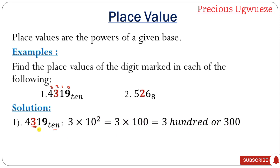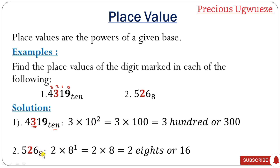If the base changes, the digit 3 will not retain the place value of 300. For example, in 526 base 8, the place value of 2 is found by noting its position is 1, so it's 2 times 8 raised to the power 1, which is 2 times 8 equals 16. If this were base 10, the place value of 2 would be 20, but because it is base 8, it is 16. That's how to find place values in different number systems.